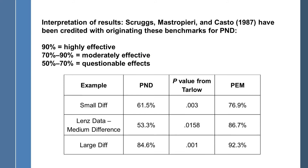To interpret the results, we use the benchmarks put forward by Scruggs, Mastropieri, and Casto, 1987. These are somewhat arbitrary benchmarks, but they seem logical. Anything below 50% would be no effect or negative effect; 50 to 70% would be a questionable effect; 70 to 90% moderately effective; and 90% or above highly effective, according to Scruggs and colleagues.